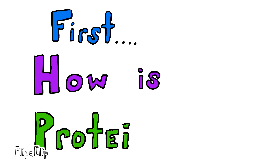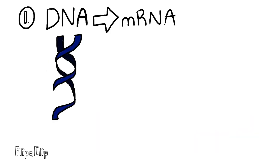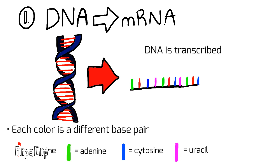First, I'm going to give a quick background on how proteins are made. The first step is transcription. In this step, DNA is transcribed into mRNA.